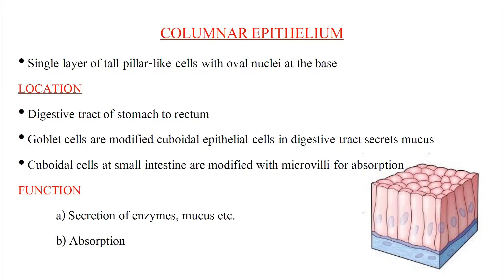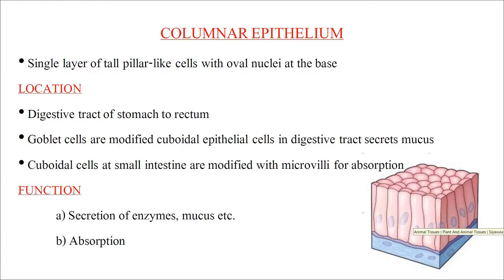Columnar epithelium is made up of a single layer of pillar-like cells with oval-shaped nuclei at the base. It is located in the digestive tract from the stomach to rectum. Goblet cells of the digestive tract are modified columnar epithelial cells that secrete mucus. Cuboidal cells in the small intestine are modified with microvilli for absorption. Functions include secreting enzymes and mucus, and aiding absorption of digested food.